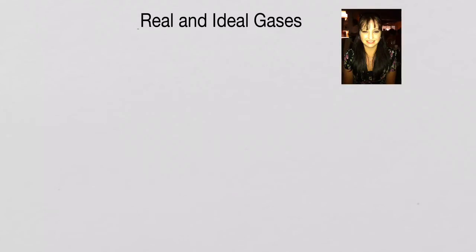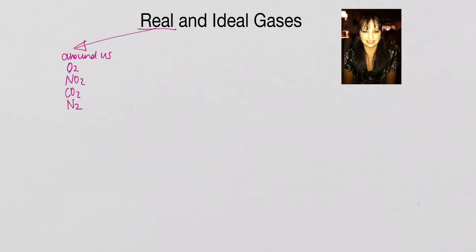So let's start off by discussing what is a real gas. A real gas is something that really exists — these are all around us. Some real gases are oxygen (O₂), nitrogen dioxide (NO₂), carbon dioxide (CO₂), nitrogen gas (N₂), and we can carry on. There are also a lot of organic gases, but these are a few examples of real gases.